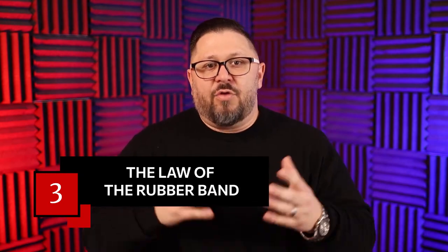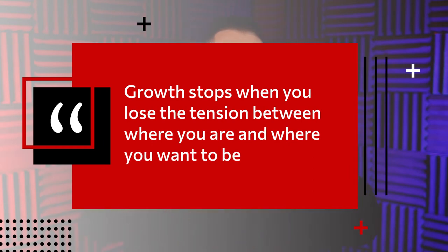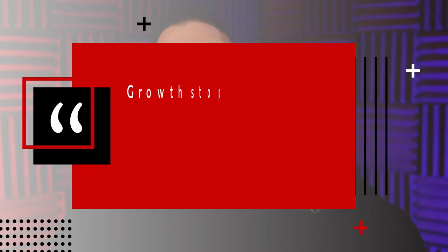Number three: the law of the rubber band. The law of the rubber band states that growth stops when you lose the tension between where you are and where you want to be. No matter what the size of your church is, if you start to lose that tension between where you're at as a church and where you're going, then growth stops. We have to constantly be operating at the edge of our ability — it's only at the edge of our ability that we can begin to expand our capacity.